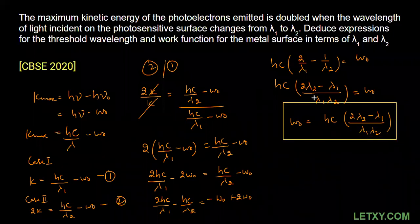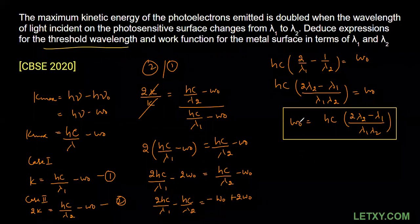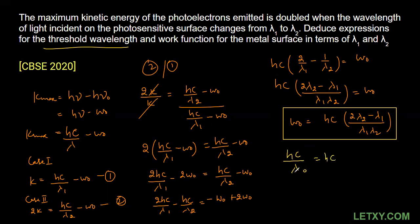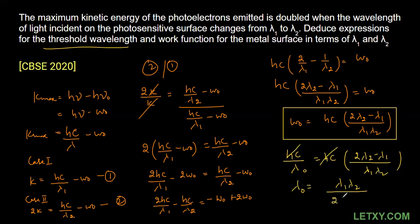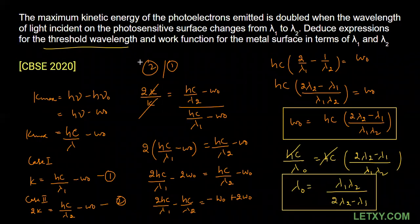We also have to find the threshold wavelength. We know that the work function W₀ can be written as hc/λ₀, where λ₀ is the threshold wavelength. Setting hc/λ₀ = hc(2λ₂ − λ₁)/(λ₁λ₂), the hc cancels out. Reciprocating both sides gives the threshold wavelength: λ₀ = λ₁λ₂ / (2λ₂ − λ₁). This is the expression for threshold wavelength.